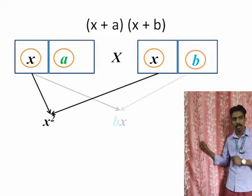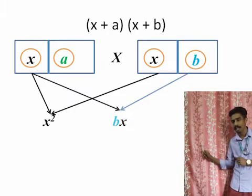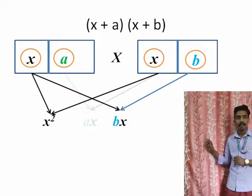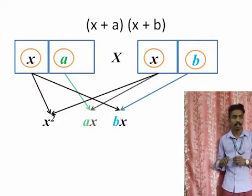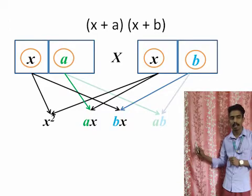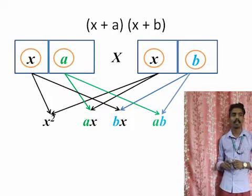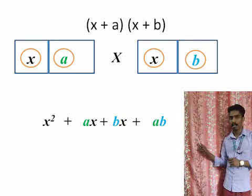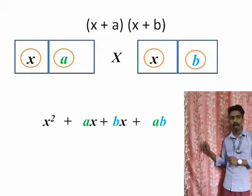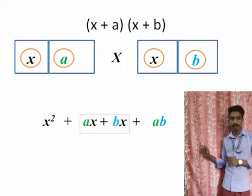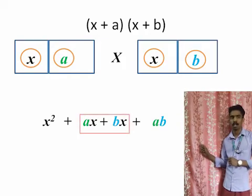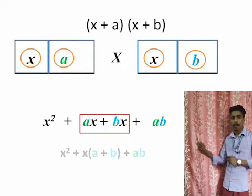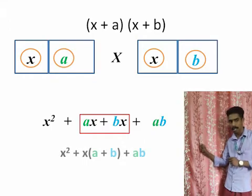x times x equals x squared, and x times b gives bx. Now we take the second term of the first bracket, which is a, and multiply: a times x equals ax, and a times b gives ab. Now we add all the terms. We have x squared, and two terms with x: bx and ax. We take x as a common factor to simplify and add. The result is x squared plus (a+b)x plus ab.